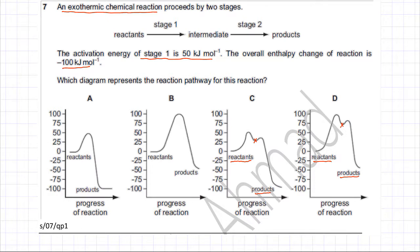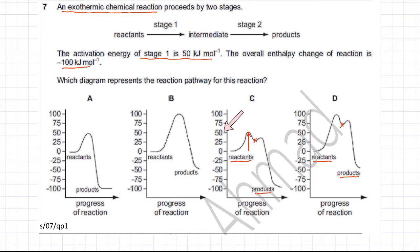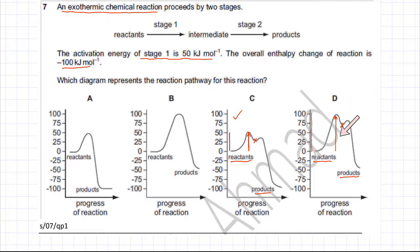The activation energy of stage one is given as 50 kilojoules per mole. Activation energy is the initial energy needed by the reaction. In option C, the reactants gain energy equal to 50 kilojoules per mole for stage one — that part is correct. In option D, the activation energy for the first stage goes from zero up to about 100 kilojoules per mole, so D can't be correct. It has to be option C.